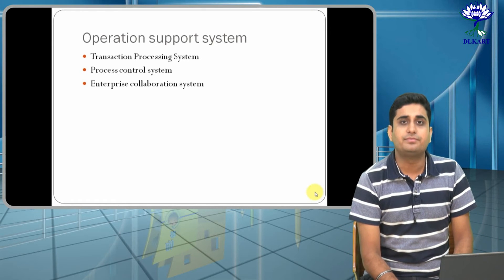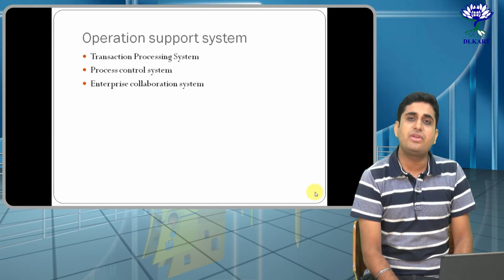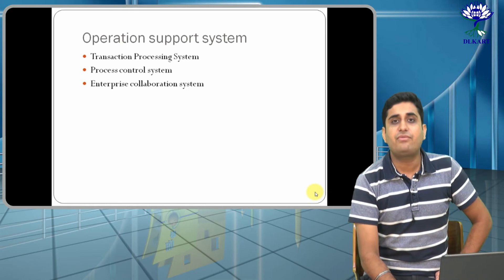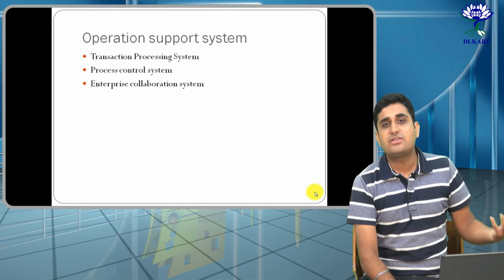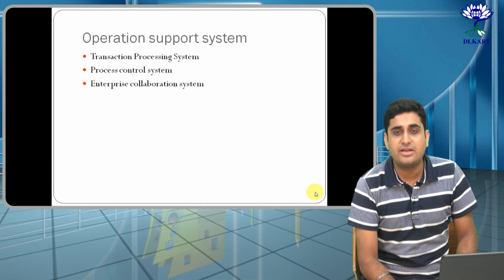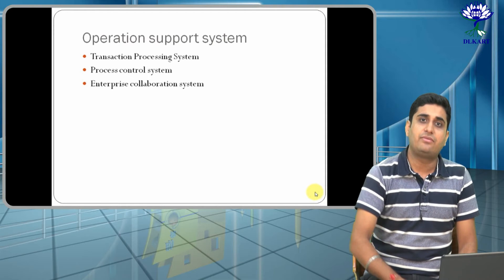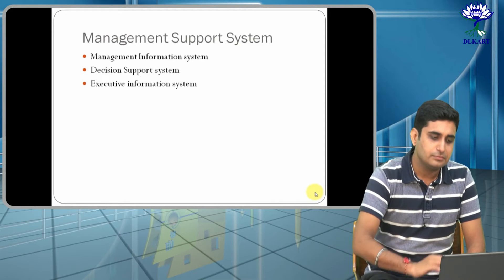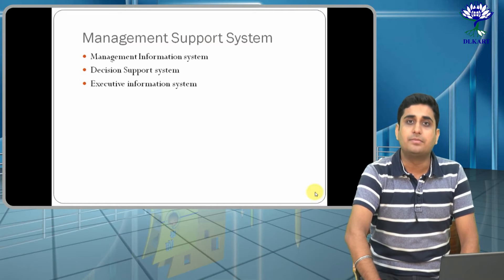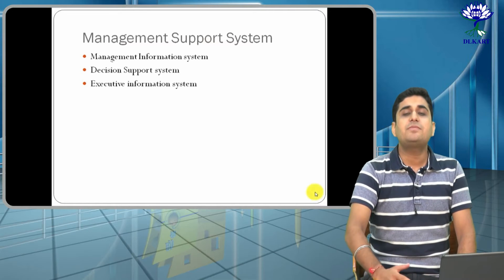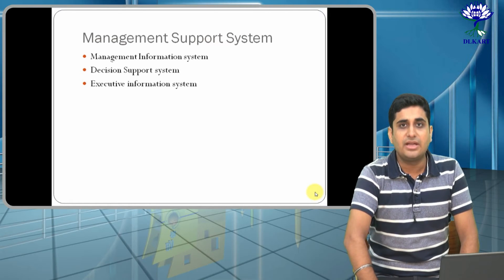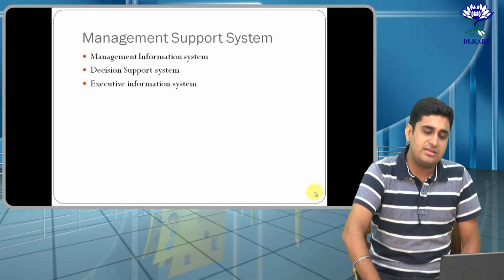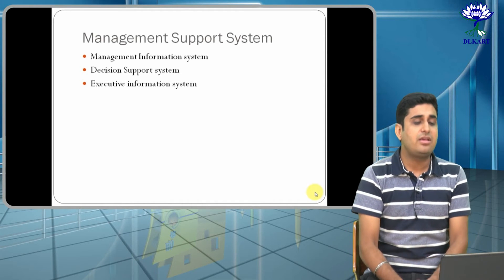The Enterprise Collaboration System is the next subcategory. In this system, most of the data or information of the enterprise is collaborated — that means information is fetched from one entity to another and from another entity to another, enabling cross-entity information sharing across the organization.